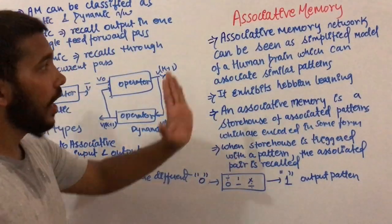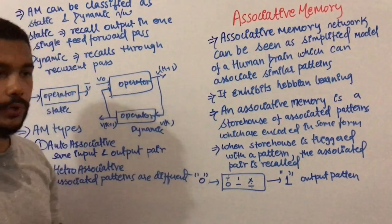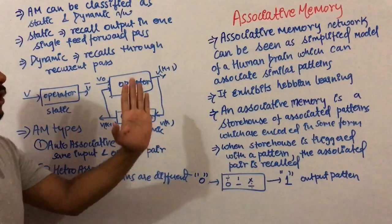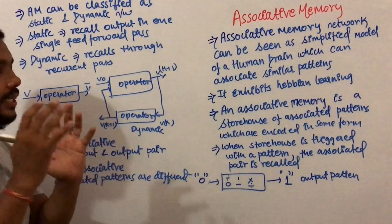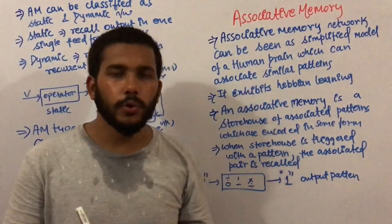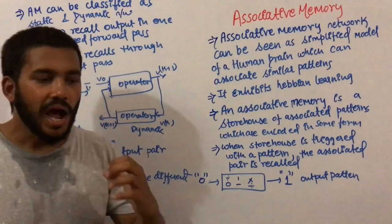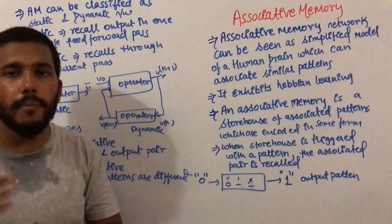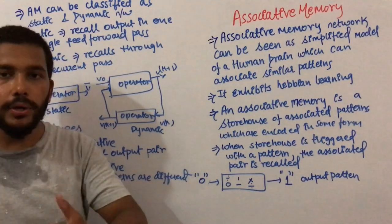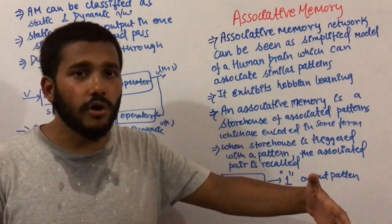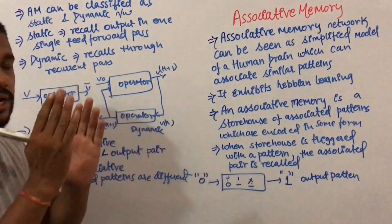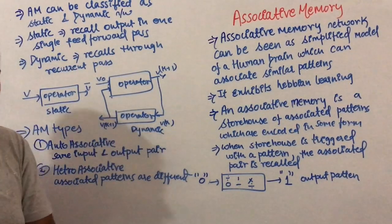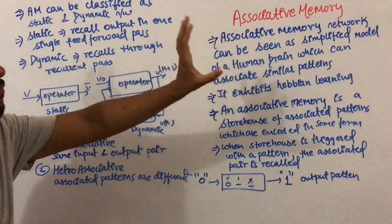In this video I am going to talk about associative memory. This associative memory is similar to the simplified model of the human brain which can associate similar patterns. Like how do we recognize some patterns — if you remember Sachin Tendulkar then you remember he belongs to cricket or that he scored 10,000 runs. So you are considering a pattern and based on that pattern, different memories are recalled.